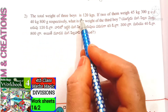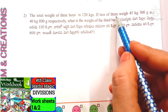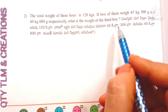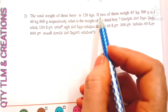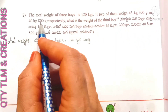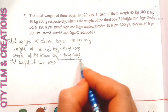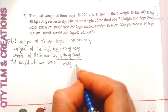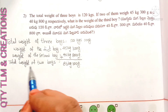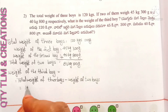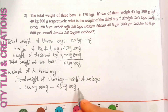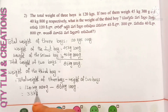Next question: the total weight of 3 boys is 120 kilograms. If two of them weigh 45 kilograms 300 grams and 40 kilograms 800 grams respectively, what is the weight of the third boy? Total weight of two boys equals 86 kilograms 100 grams. Weight of the third boy equals total weight of 3 boys minus total weight of 2 boys: 120 kilograms minus 86 kilograms 100 grams equals 33 kilograms 900 grams.